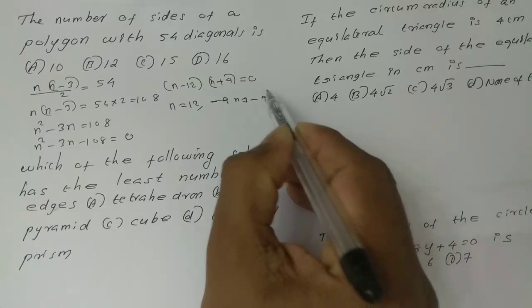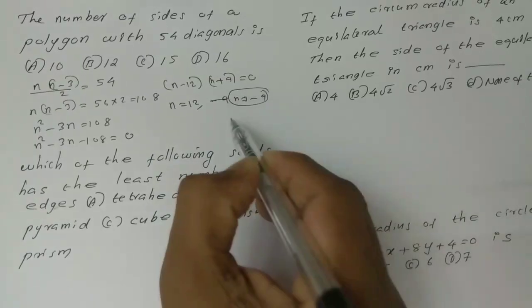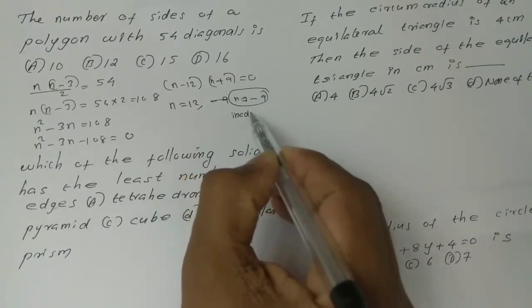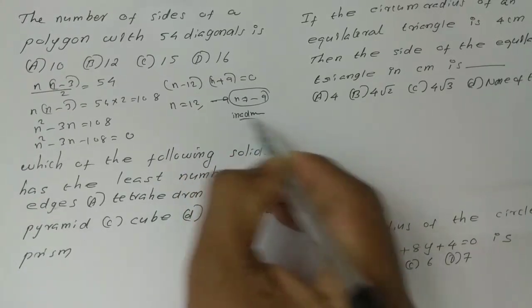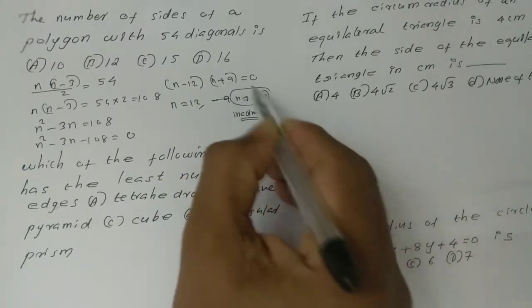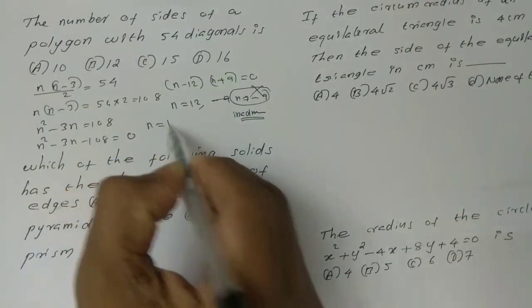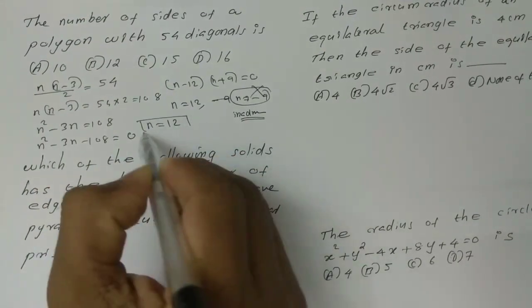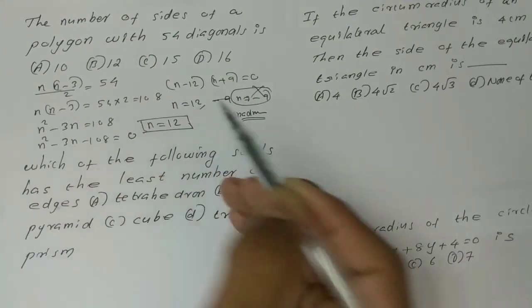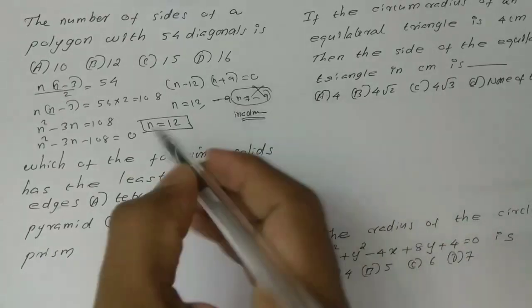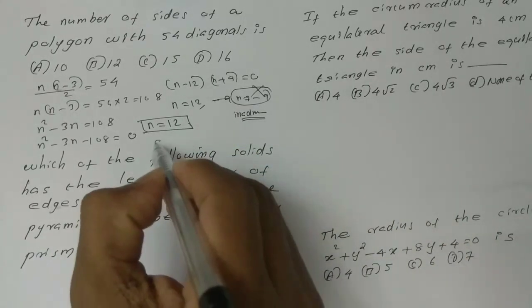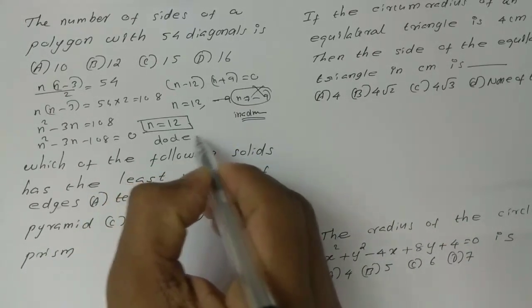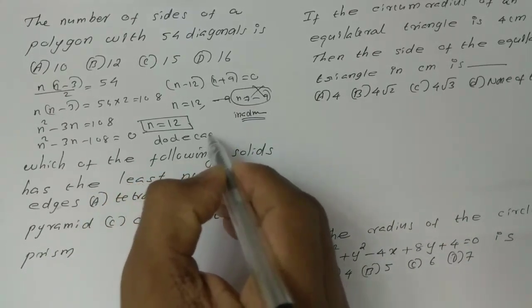n = -9 is inadmissible in this condition. Therefore n = 12. The answer is n = 12.